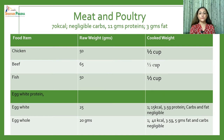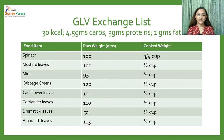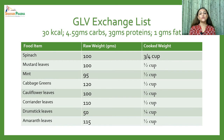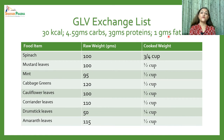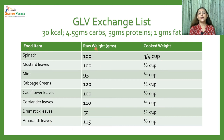The green leafy vegetable exchange provides only 30 kilocalories per exchange, 4.5 grams of carbohydrates, approximately 3 grams of protein, and 1 gram of fat. Foods in this list include spinach, mustard leaves, mint, cabbage greens, cauliflower leaves, coriander leaves, drumstick leaves, and amaranth leaves — all in the range of approximately 100 grams raw weight, or half to three-quarters cup of cooked vegetable.